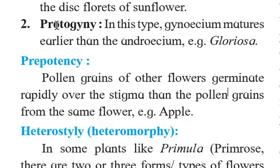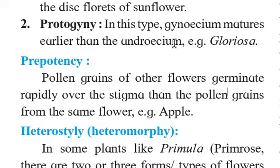In the case of protogyny, the gynoecium matures earlier than the androecium. In protogyny, the gynoecium — meaning stigma, style, and ovary, i.e., the carpel — matures first in the bisexual flower. After some time, some days later, the androecium will mature.